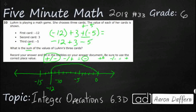Now I need to add 3. Remember: when we subtract we go to the left; when we add, we go to the right. So we're going to jump 3 spaces to the right — 1, 2, 3 — and we end up here at negative 9.